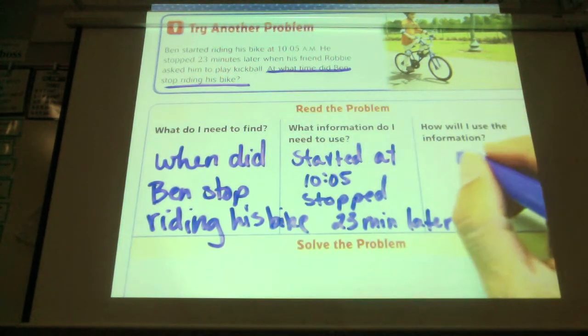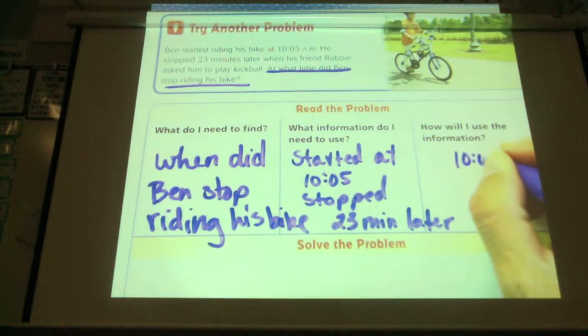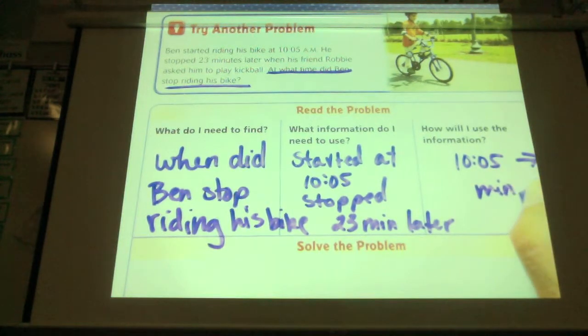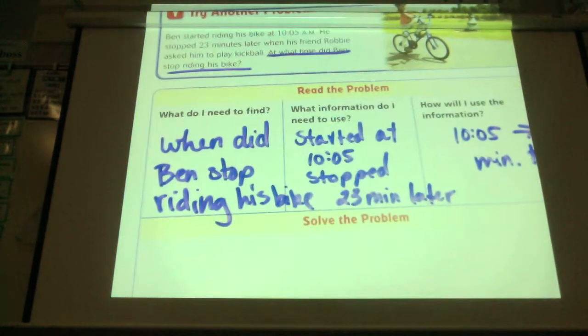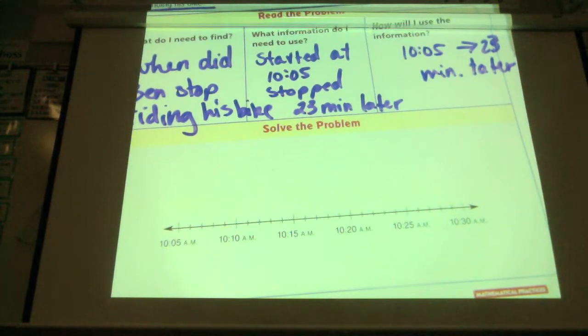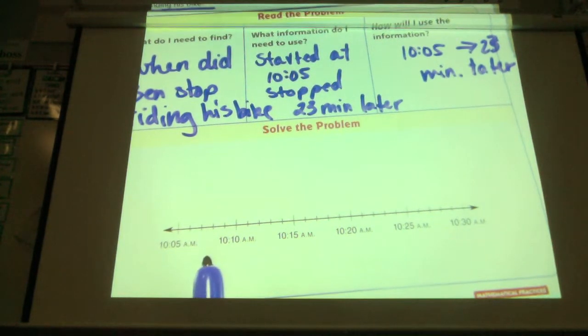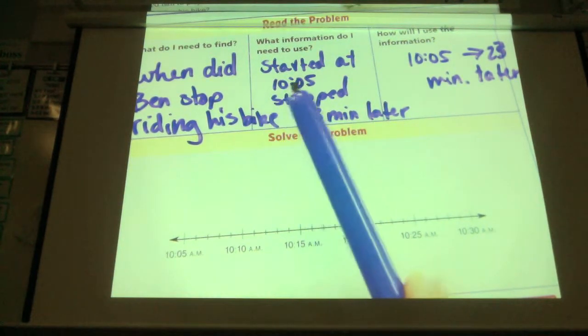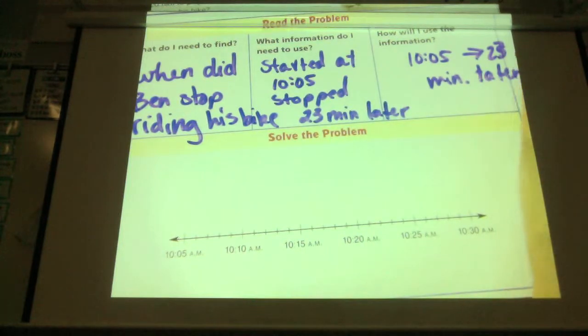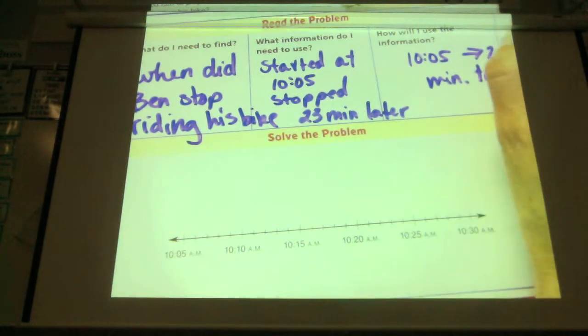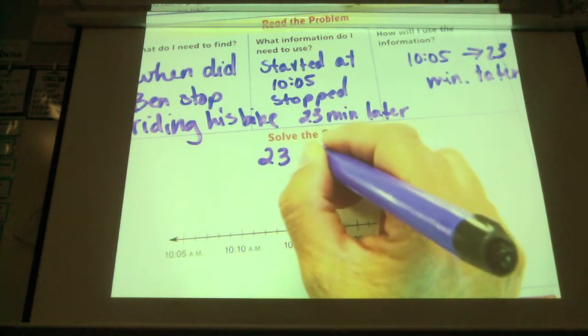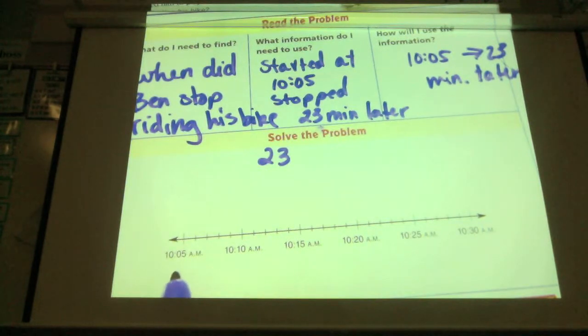And how are we going to use this information? This time we're going to be counting forward. Starting at 10:05 and then going 23 minutes later. So I'm going to start at 10:05 on my number line.